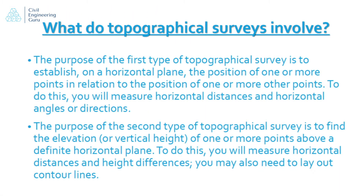What do topographical surveys involve? The purpose of the first type of topographical survey is to establish on a horizontal plane the position of one or more points in relation to one or more other points. To do this, you will measure horizontal distances and horizontal angles or directions.